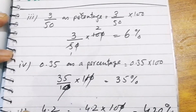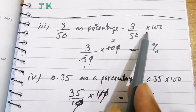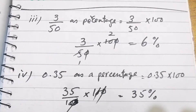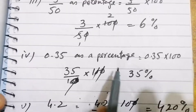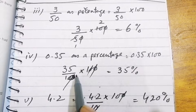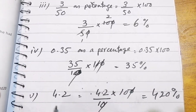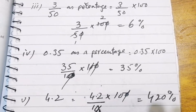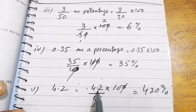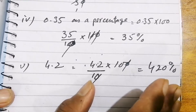3 over 50 as a percentage: 3 over 50 multiplied by 100 — 50 goes into 100 twice, so 3 times 2 equals 6 percent. Then 0.35 as a percentage: 0.35 multiplied by 100 gives 35 percent. And 4.2 multiplied by 100, removing the decimal, gives 420 percent.